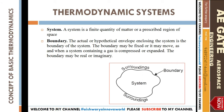When we focus on a particular process, and beyond that there might be another process, the imaginary line that bounds the region we are concentrating on is called a boundary. After the boundary, what we have is the surrounding.